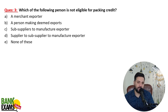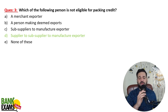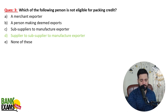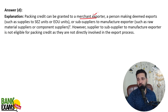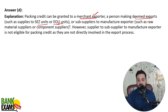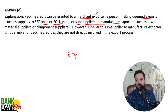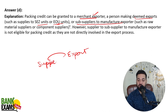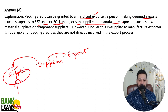Question: Which of the following persons is not eligible for packing credit? A supplier to the sub-supplier to the manufacturer is not eligible because that person is not included in the export process. Packing credit is granted to merchant exporters, persons making deemed exports (such as suppliers to SEZ units or export-oriented units), and sub-suppliers to the manufacturer. However, a sub-supplier to a sub-supplier is not eligible for packing credit.